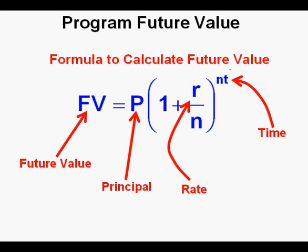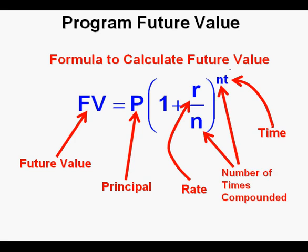This letter T stands for time, and when it comes to money and many other applications this number is usually given in years. And finally, this number N — occurring in two places — is the number of times compounded or calculated within a single unit of time. If it's just compounded once a year, the number would be 1. For monthly compounding the number would be 12, quarterly compounding would be 4, daily compounding would be 365. In each use of the formula, this number will be the same.